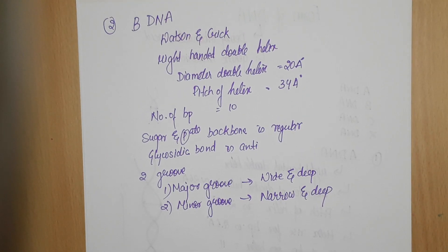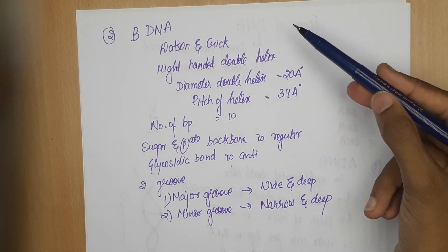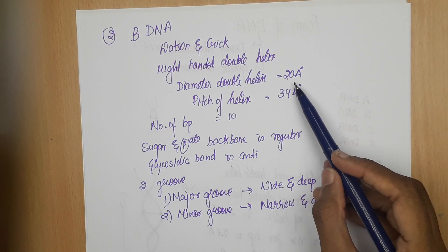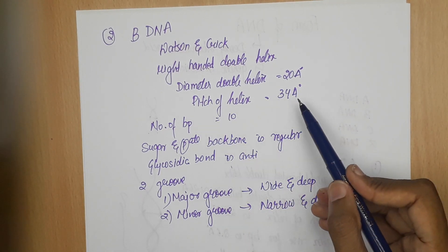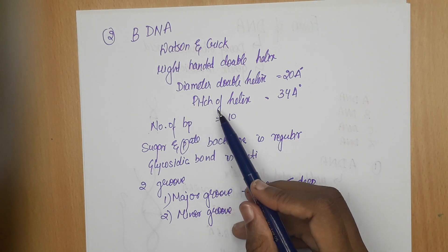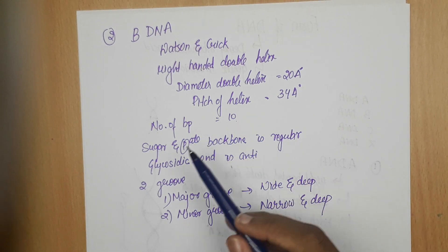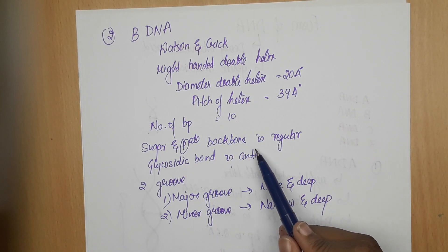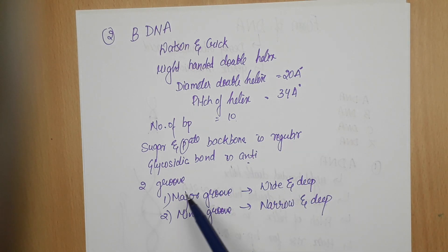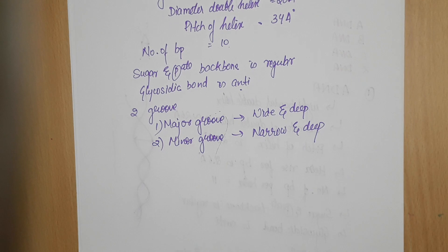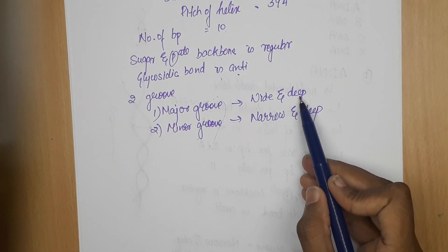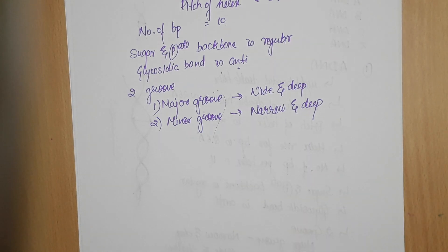To recap B-DNA: it was discovered by Watson and Crick, it is a right-handed double helix, diameter is 20 angstroms, pitch is 34 angstroms, number of base pairs per helix is 10, sugar and phosphate backbone is regular, glycosidic bond is anti, major groove is wide and deep, and minor groove is narrow and deep.